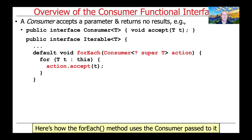Here's the Iterable interface that's defined in the Java class library. This is what List implements to give it the forEach capability. You can see that the forEach method takes a Consumer as a parameter, parameterized by a type T, and that's called the action. The body of the forEach method uses that action in order to accept each of the elements that are part of the iterable and do something with it.